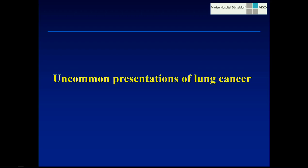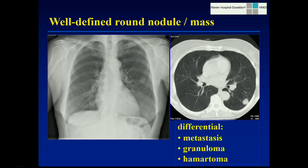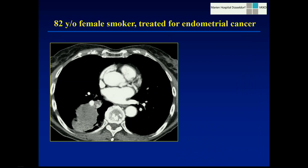Now I'm going to present some uncommon presentations of lung cancer. In this case, with a rather well-defined, rather round lesion, most of us would not have thought of non-small cell lung cancer in the first place. The differential diagnosis in a well-defined, round, solid lesion is usually metastasis — although solitary metastases are obviously rare — granuloma, or hematoma. In a case like this, we should probably look for fat or calcification very carefully.